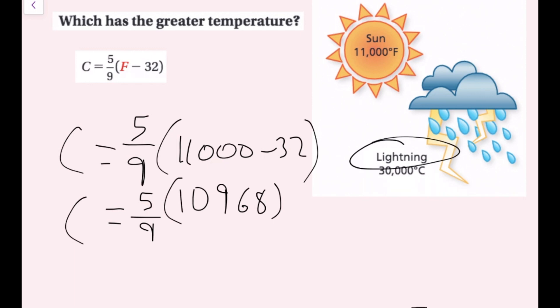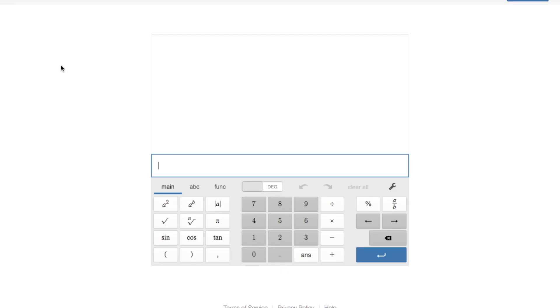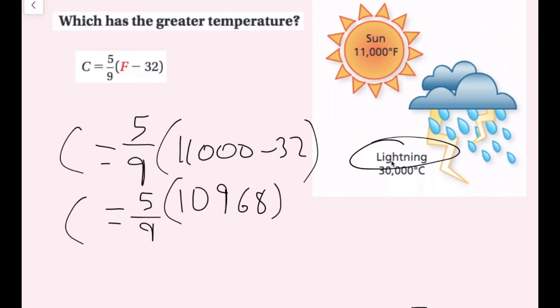So I'm going to circle the lightning for the greater temperature. If we wanted to double-check that, I could go to my calculator. So I'm going to plug in five-ninths times 11,000 minus 32. And I see that this value turns into 6,093.3 repeating. So if I go back over and rewrite this as C equals 6,093, I'll put in a third because 0.3 repeating is a third. So this is how many degrees Celsius this Fahrenheit temperature is. And this is far less than lightning. So I know for a fact that the lightning has a greater temperature. And now we're done.